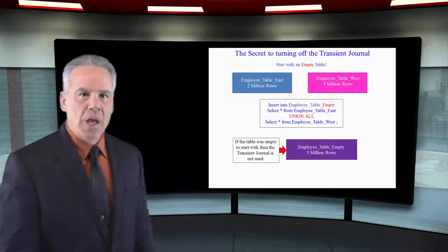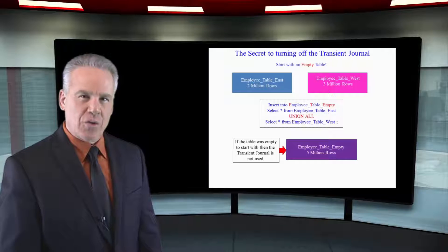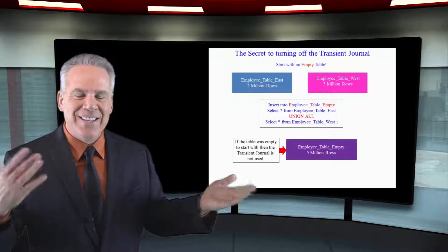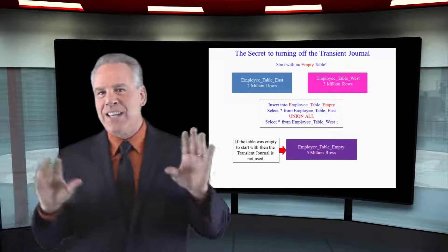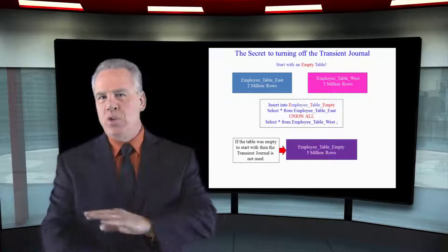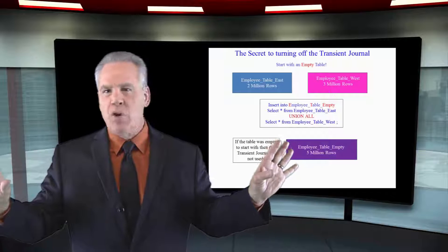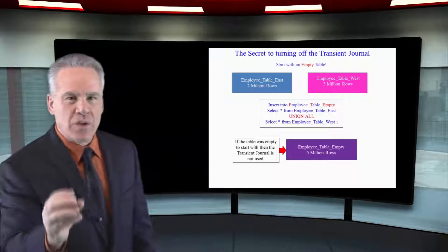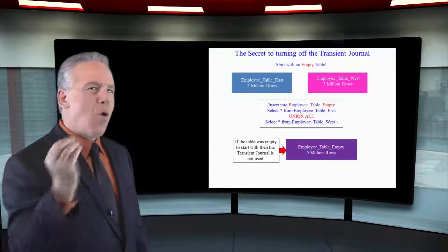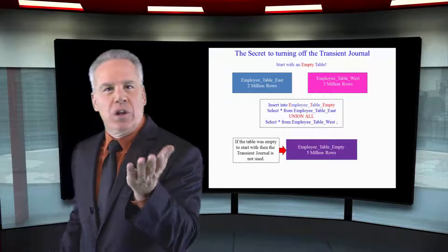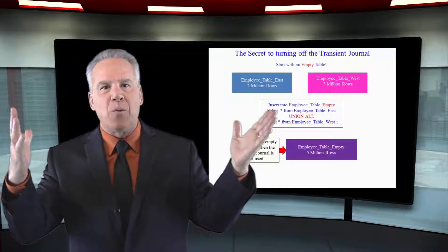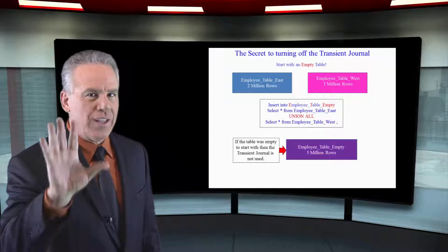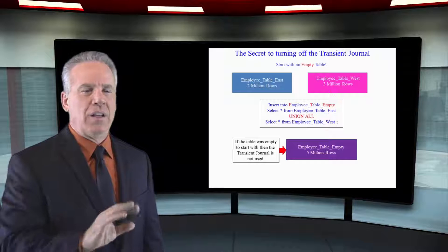People say to me all the time, 'Tom, can we turn off the Transient Journal?' And I go, 'Why would you want to do that?' This is for your protection — protection of the data warehouse. When you have billions of rows in a table and thousands of tables, you've got to make sure that not one row is corrupt, or users could lose faith in the data warehouse. Making sure that data integrity is perfect is a must.